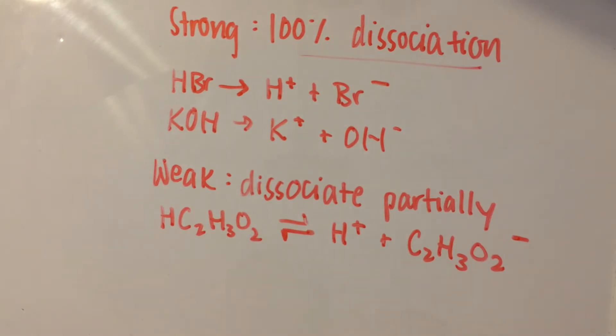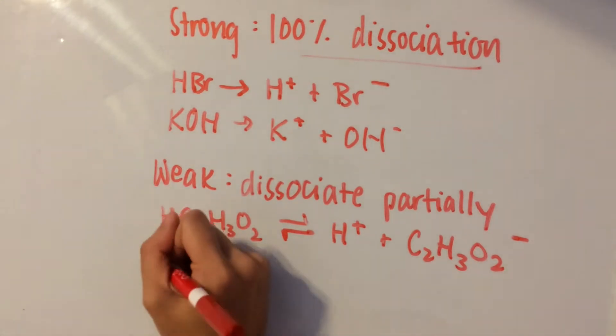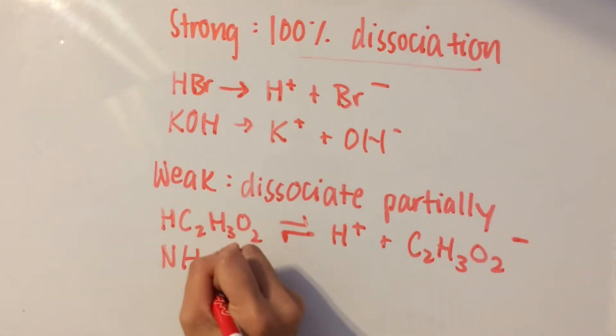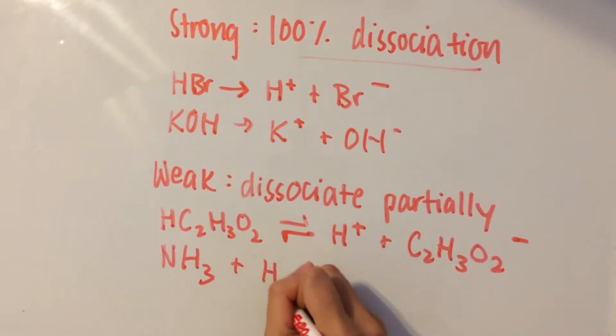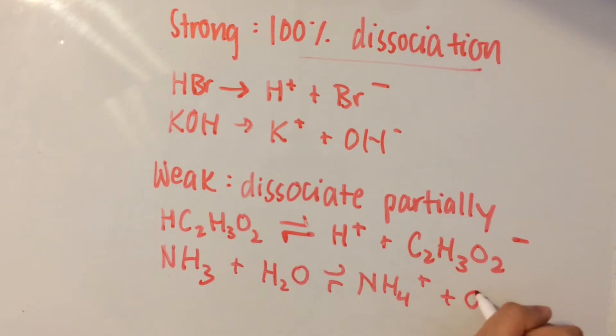A weak base would be, like I said before, NH3. And that, when added to water, is going to make NH4 plus and OH minus.